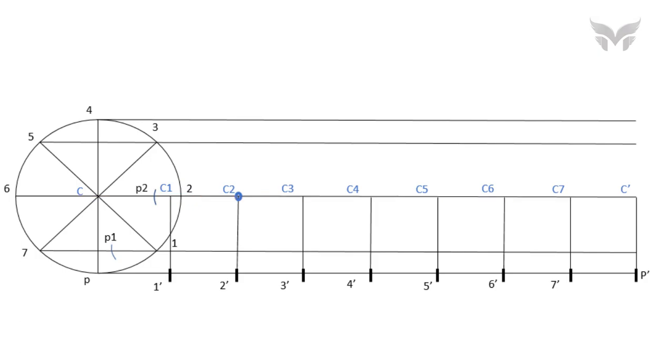Keep in mind the final shape of a curve we will have and mark the point at correct position. Do this for rest of the points with centers C3, C4, C5, C6 and C7 by cutting an arc on the lines which are passing through 3, 4, 5, 6 and 7 respectively.